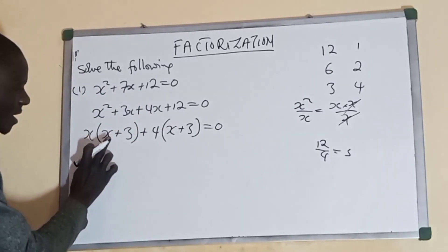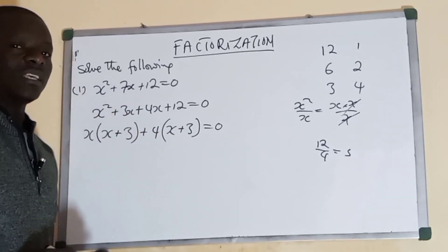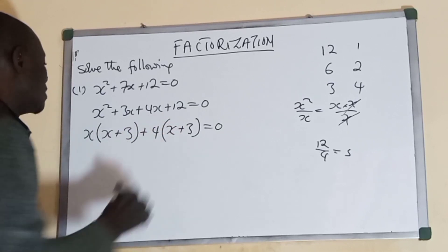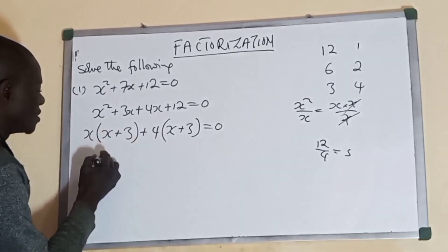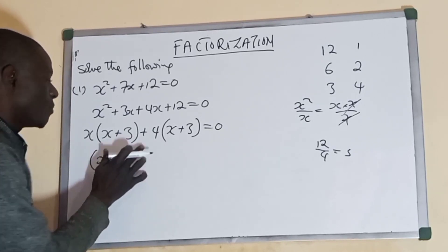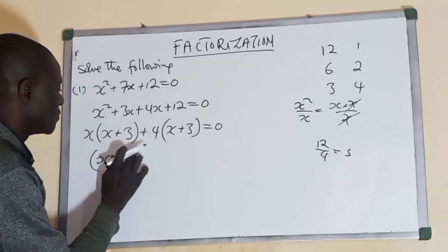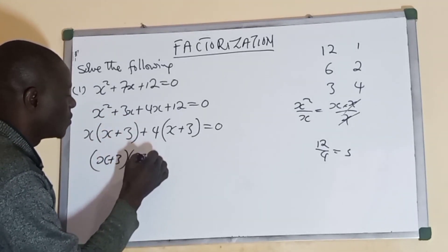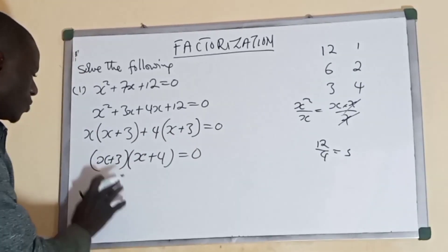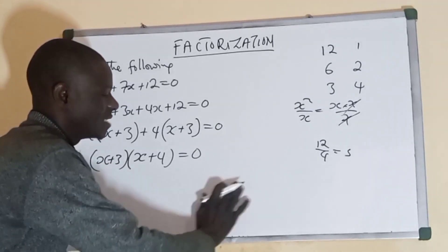So the next thing here is 1 bracket and 1 bracket. So you have x plus 4 equals to 0. Very simple. So it can answer and authorize. The answer is authorizing the equation.